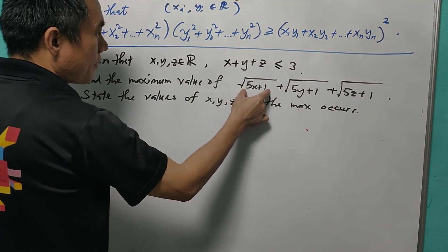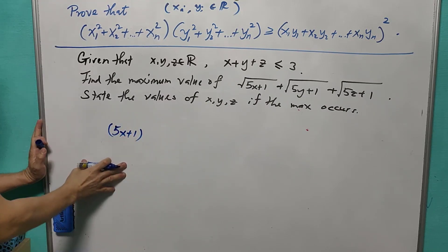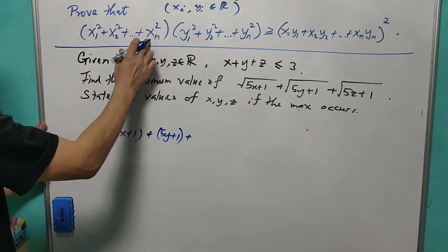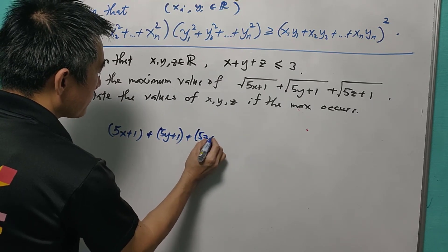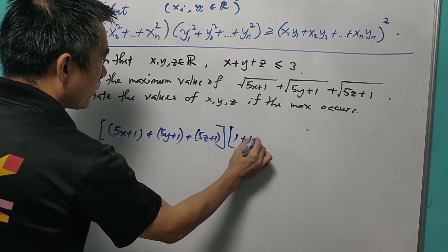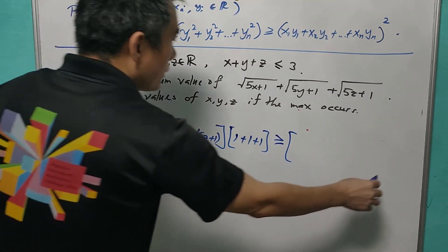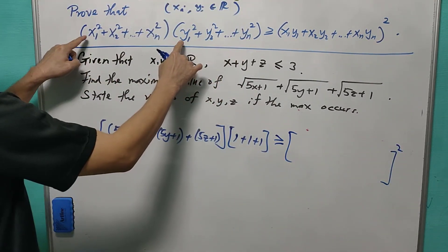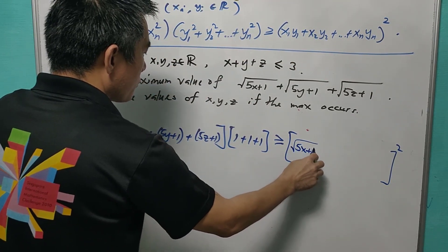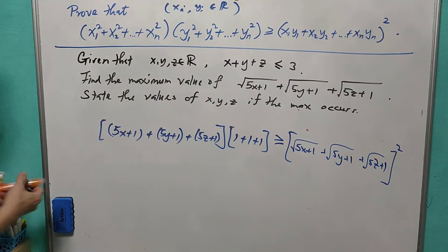In order to get √(5x+1), we write x1² = 5x+1. Similarly, x2² = 5y+1 and x3² = 5z+1. So we have three terms on one side, and the corresponding three terms on the other side will be 1 + 1 + 1. Using the Cauchy inequality, the product of the sums is greater than or equal to the square of the cross term: (√(5x+1) + √(5y+1) + √(5z+1)), which we call J.